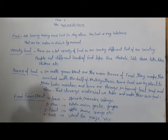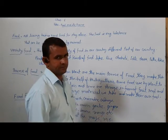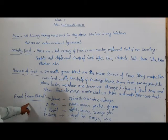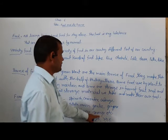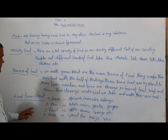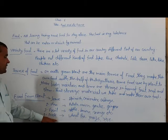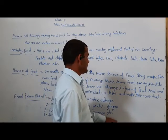Some food materials are from the stem, such as aloo, onion, garlic. Some food materials are from fruits, such as apple, banana, and others. Some food materials are from seeds: wheat, pea, rice, gram, etc.